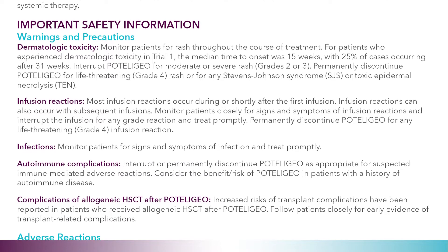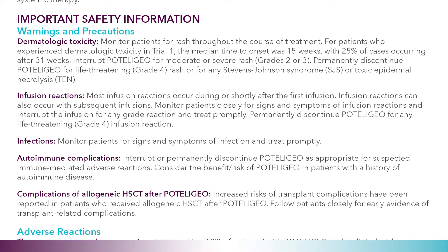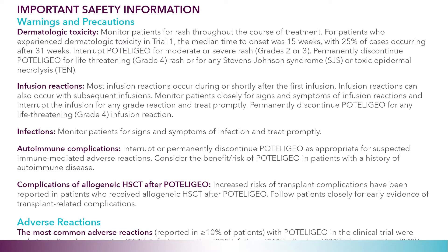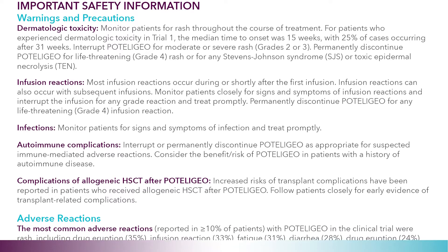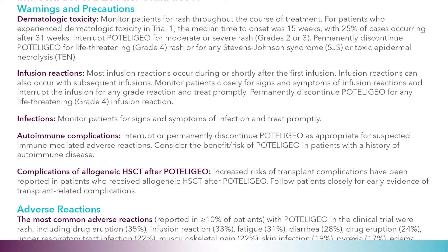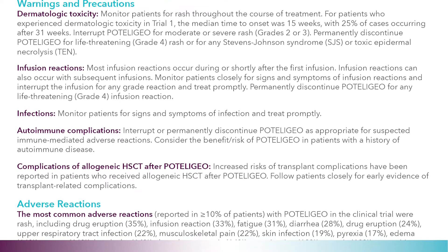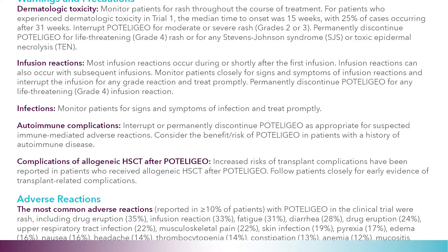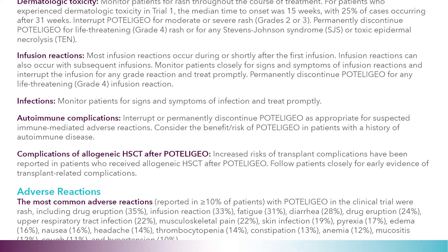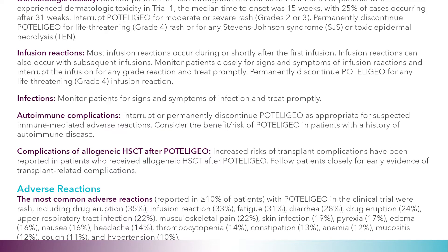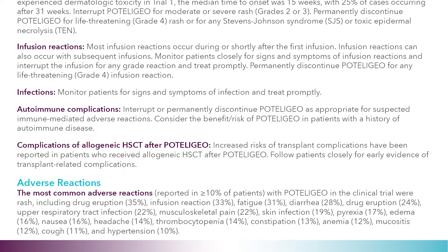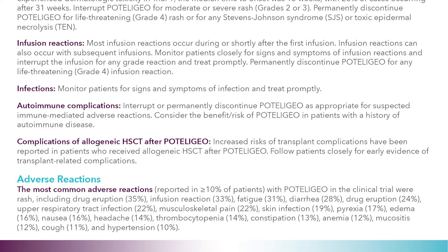Infusion reactions: Most infusion reactions occur during or shortly after the first infusion, but can also occur with subsequent infusions. Monitor patients closely for signs and symptoms of infusion reactions, interrupt the infusion for any grade reaction, and treat promptly. Permanently discontinue mogamulizumab for any life-threatening grade four infusion reaction. Infections: Monitor patients for signs and symptoms of infection and treat promptly. Autoimmune complications: Interrupt or permanently discontinue mogamulizumab as appropriate for suspected immune-mediated adverse reactions.